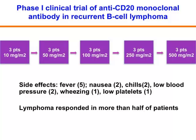Here is an example of a phase 1 clinical trial — the phase 1 study of rituximab done in the 1990s. This is a typical three-by-three design: you take three patients and treat them at a low dose — here, 10 mg/m². If it's tolerated, you escalate the dose and evaluate all side effects. The side effects for rituximab included fevers, rarely GI side effects like nausea, chills, low blood pressure very rarely, occasional wheezing, and low platelets. In the phase 1 study, it was determined that the drug was actually very safe, and more than half of patients had significant shrinkage of their lymphoma — very exciting for a monoclonal antibody targeted therapy.